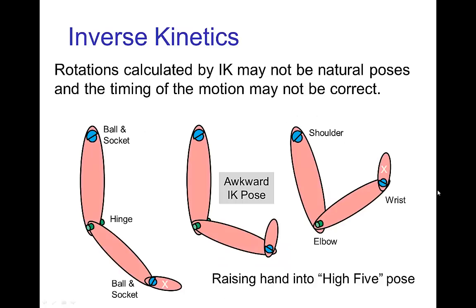This inverse kinematics isn't foolproof — the rotations that are calculated may not be natural poses. You may lift the hand up to do a high five and some of the intermediate positions may look awkward and unnatural. Furthermore, the timing of the motion from the starting position to the end position may not be correct.